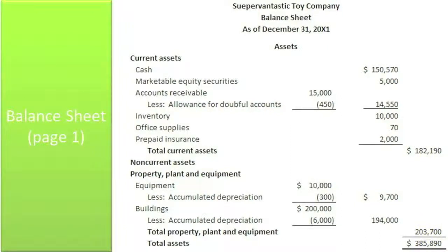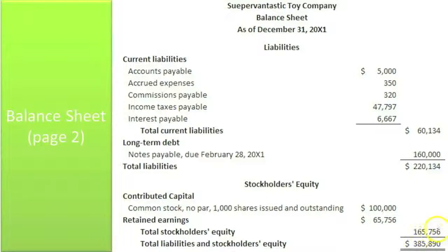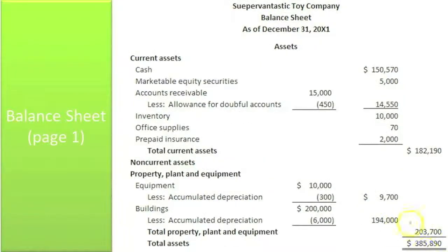Now, if our liabilities and equity don't add up to that number, then we've done something wrong. All of our current liabilities added up to $60,134. Long-term debt is $160,000, so our total liabilities are $220,134. Here's the common stock and retained earnings from the statement of shareholders' equity to get total stockholders' equity of $165,756. If you add your total liabilities and your total stockholders' equity, you get total liabilities and stockholders' equity of $385,890 — matching our total assets of $385,890. Our balance sheet balances, which it should have because our adjusted trial balance balanced. It appears we've done that properly.